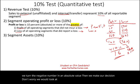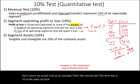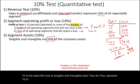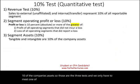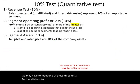The third test is the 10% asset test. We look at tangible and intangible assets — do they represent 10% of the company's total assets? Those are the three tests, and we only have to meet one of them for a division to be considered a reportable segment.